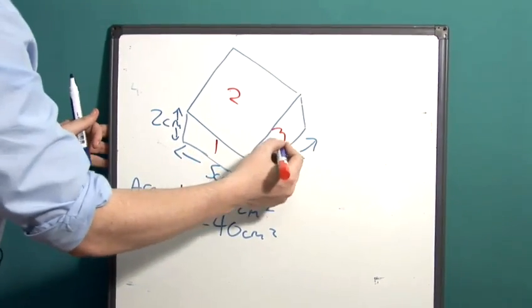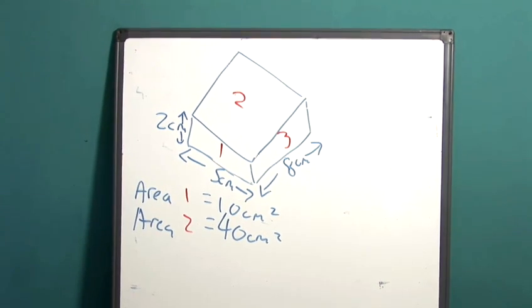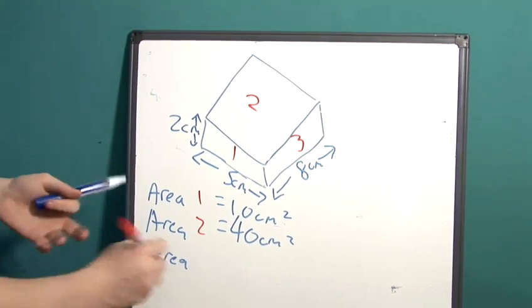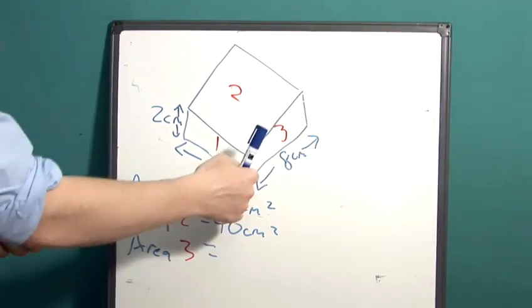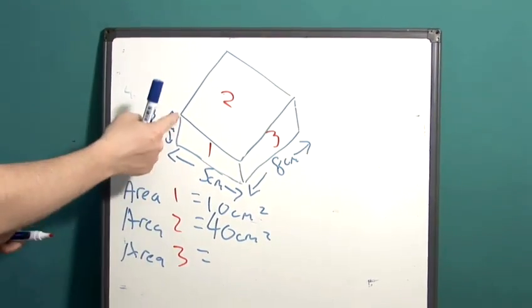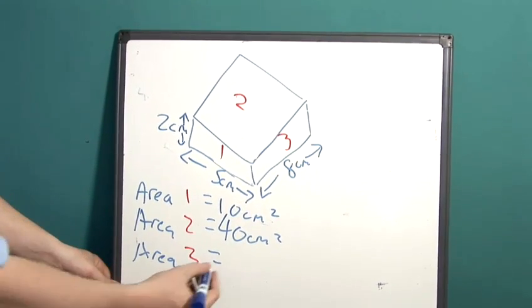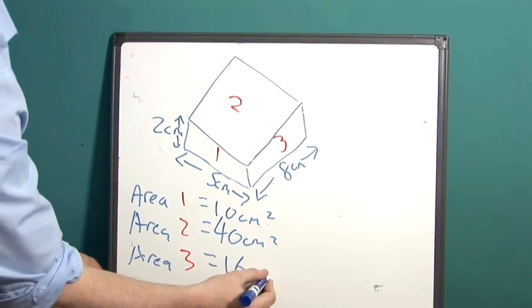Finally, let's work out the area of that face. The area of 3 is equal to this length here, 8, multiplied by this 2 here because that is the same length as this bit. So 8 multiplied by 2 is 16 centimetres squared.